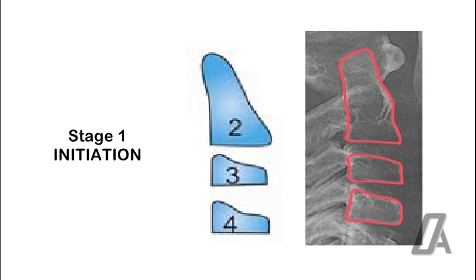Stage 1, Initiation, marks the beginning of adolescent growth. Lower borders of C2, C3, and C4 will be flat and wedge-shaped. Superior borders are tapered from posterior to anterior. 80-95% of pubertal growth remains.